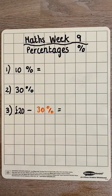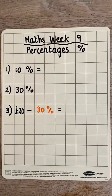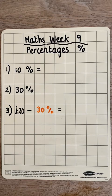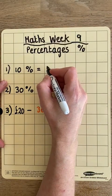On my notes I've already written out the three steps. First of all, find 10% because that's quite straightforward. Once I've done that I can find 30%, and then I can take that off my cost. So first, let's find 10%. To find 10% of an amount, we divide by 10.